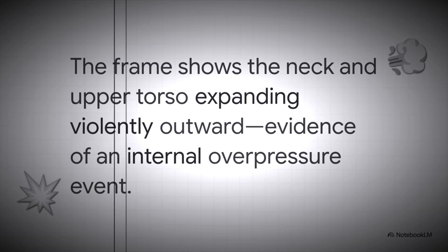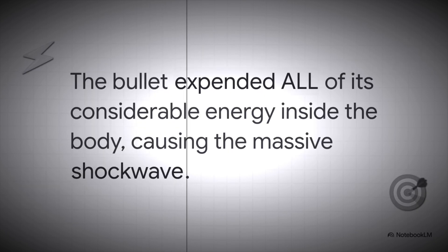The key takeaway here is that this isn't an explosion from something outside the body. It's a massive overpressure event happening inside it. And that is the aha moment. It explains everything. The reason the bullet didn't exit is because it couldn't. It had to expend all, and I mean all, of its 2,000 foot-pounds of energy to create that incredible internal shockwave.